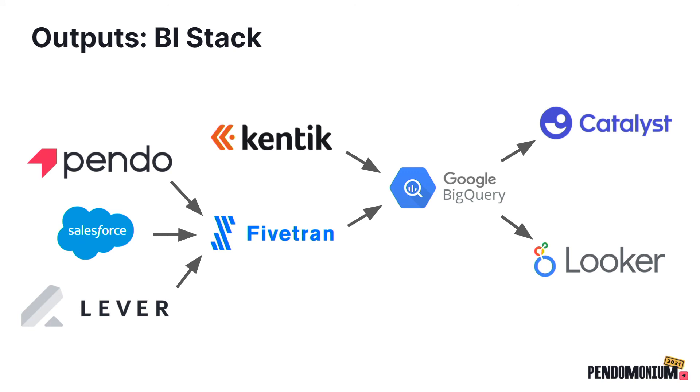We output that to Looker for dashboards and ad hoc analysis, and to Catalyst, which is the platform our customer success team uses for account health. Catalyst flags for customer success accounts that are at risk of non-renewal because they haven't logged in or their usage has dropped. There's a lot you can do by integrating Pendo's data in a BI stack.